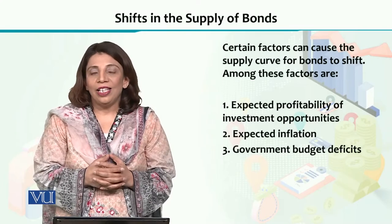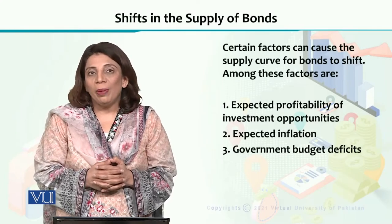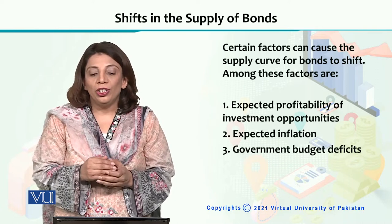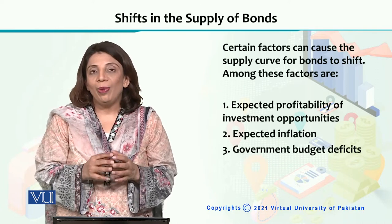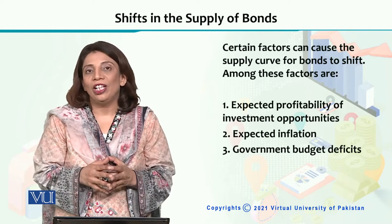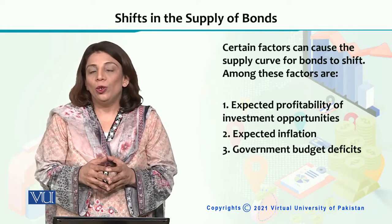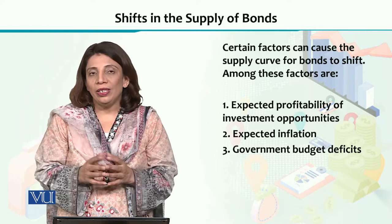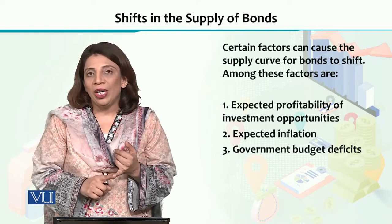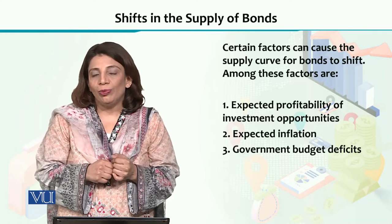In this section, we are going to talk about the factors that can cause shifts in the supply of a bond or a financial asset. There can be a number of factors. As we know, if there is a change in the price, we will be moving along the supply curve.